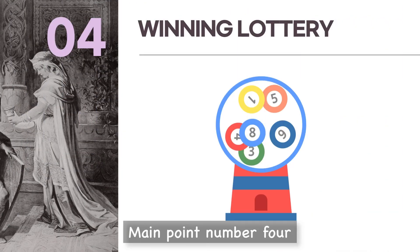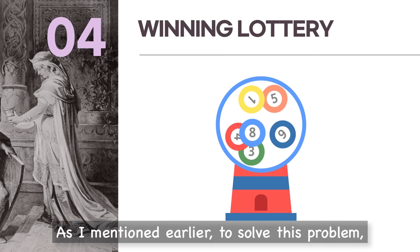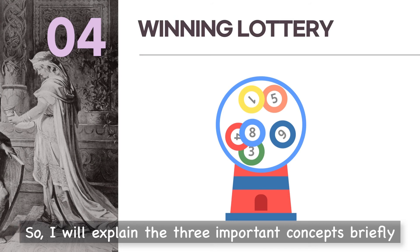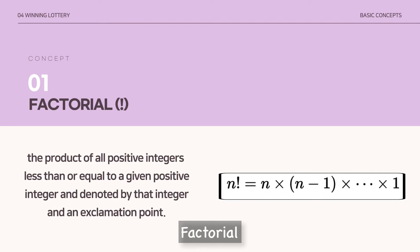Main point number four: the probability of winning the lottery. This is our last discussion today. As mentioned earlier, to solve this problem we need to understand some mathematical concepts first, so I will explain three important concepts briefly. Number one: factorial. Factorial is the product of all positive integers less than or equal to a given positive integer, and is denoted by that integer and an exclamation point.